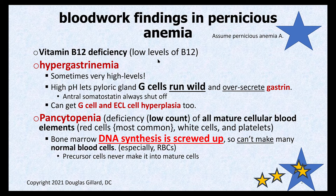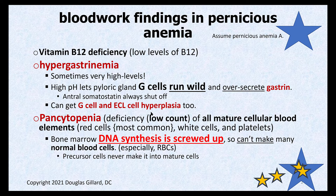With an attack against parietal cells, you're not making acid or intrinsic factor. Without acid, there's no way to shut off your G cells, and G cells secrete gastrin — so you'll have very high blood levels of gastrin, called hypergastrinemia. G cells run wild, over-secreting gastrin. Just like a bodybuilder working their muscles constantly, G cells can get big under the microscope — G cell hyperplasia. Gastrin also binds to ECL cells, causing histamine release, so you get ECL cell hyperplasia as well.